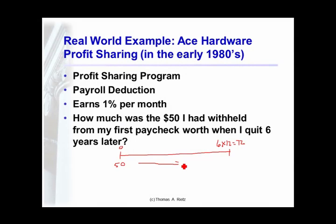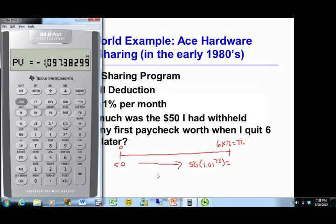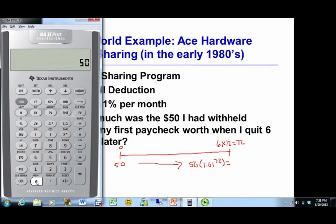would turn into $50 times 1 plus interest, 72 times. I'll have to get the calculator out for that one. 1.01 to the power of 72, I'm going to more than double my money, times the principal invested of 50, so $102.35.